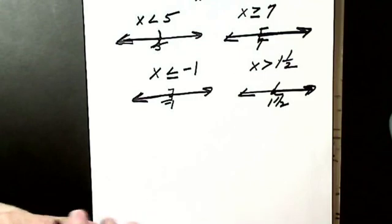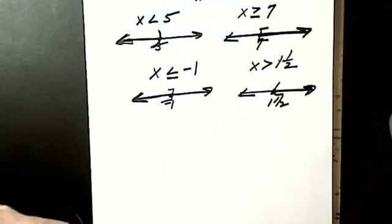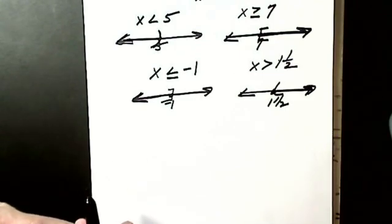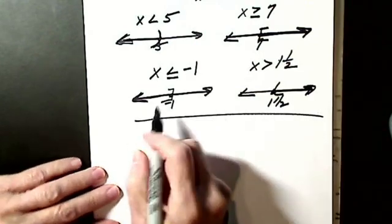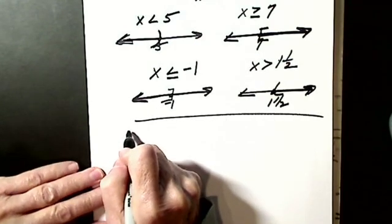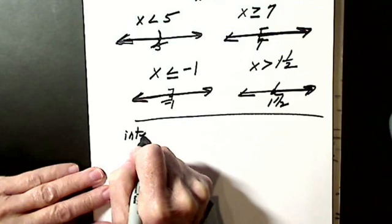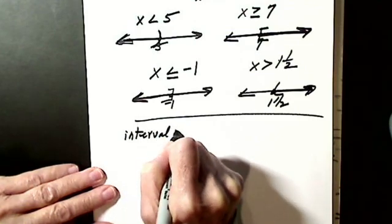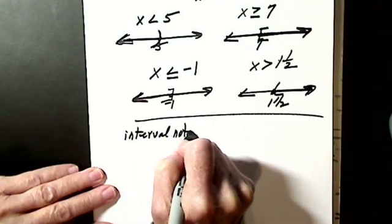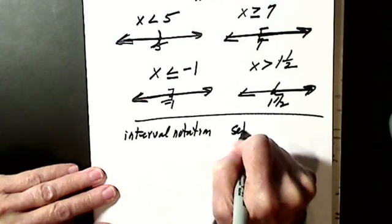So I should know how to graph inequalities. Then I have to know two other notations: one is called interval notation, and the other is called set builder notation.